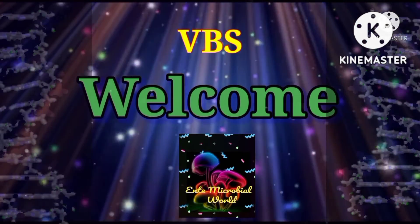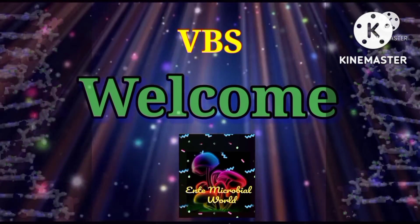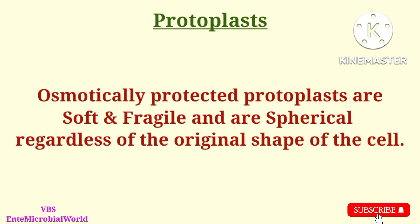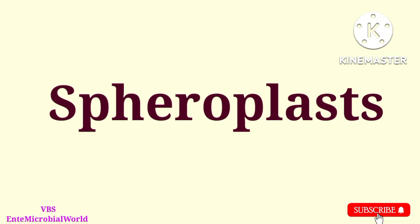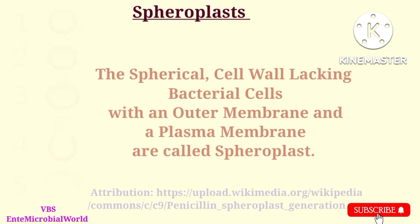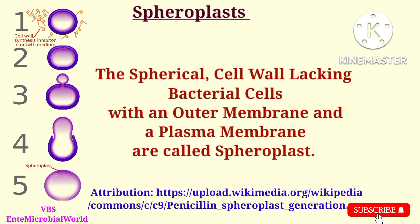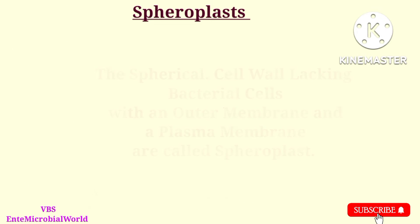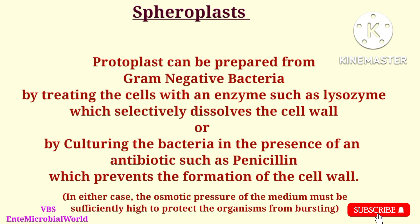Hi friends, welcome to my video. In this video we are going to see what are spiroplasts. Spiroplasts are produced from gram-negative bacteria. The spherical cell wall lacking bacterial cells with an outer membrane and a plasma membrane are called spiroplasts.